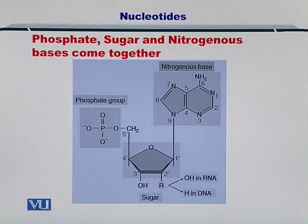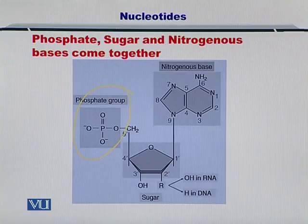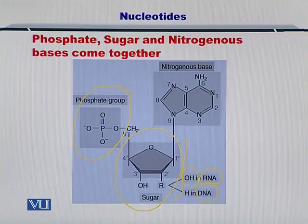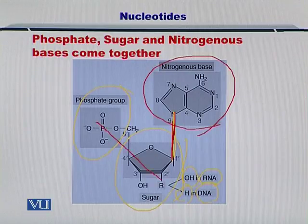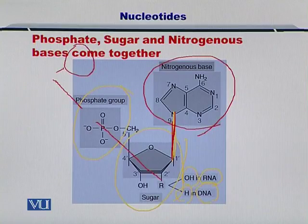Now, how do these phosphates, sugars and nitrogenous bases — or these nucleotides — come together? If you see here carefully, the phosphate group is shown here. The sugar is shown here. In case of RNA you will have another OH here; in case of the DNA you will only have a hydrogen here. On top of this, the nucleotide base comes and attaches itself. In this way the phosphate-sugar-phosphate-sugar chain continues and newer nucleotides come and attach themselves, and the DNA or the RNA molecule is constructed.